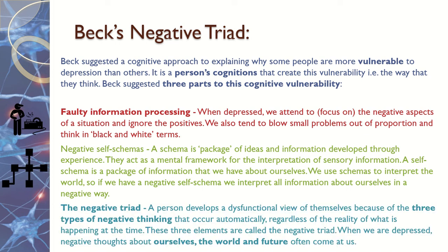The final part is the negative triad itself. This is a way of negatively thinking about three things. People who have depression have a negative view of themselves, the world, and the future. I'll explain this on the next slide.